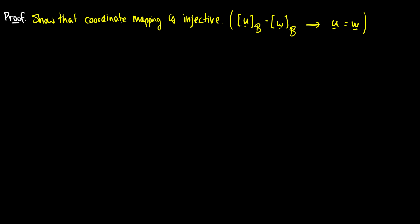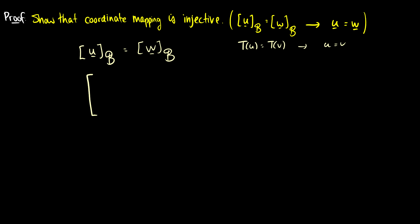Now let's prove it's one-to-one. One-to-one means that if two transformed vectors are equal to each other, then the original vectors are also equal — similar to saying T(U) = T(W) implies U = W. So let's assume that [U]_B = [W]_B. Using our earlier U, [U]_B is the vector (C1,...,Cn), and we say this equals (D1,...,Dn).